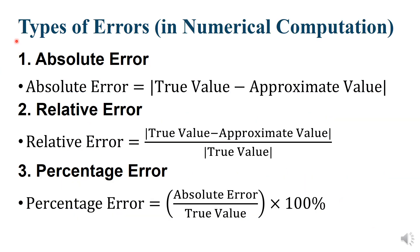Types of Errors in Numerical Computations. Absolute Error: Absolute Error equals True value minus approximate value. This is the formula.